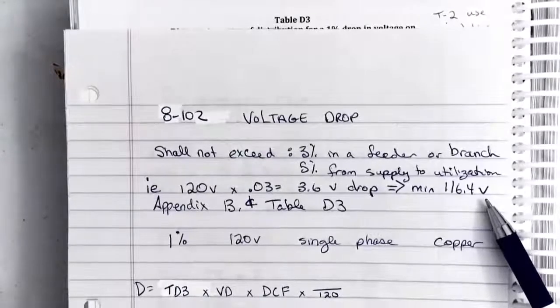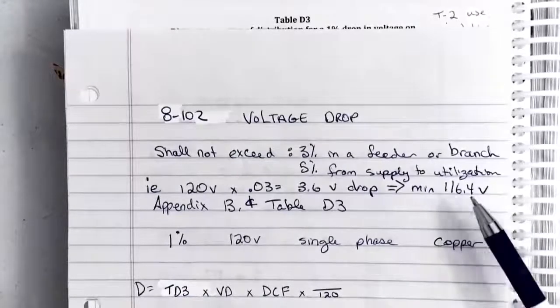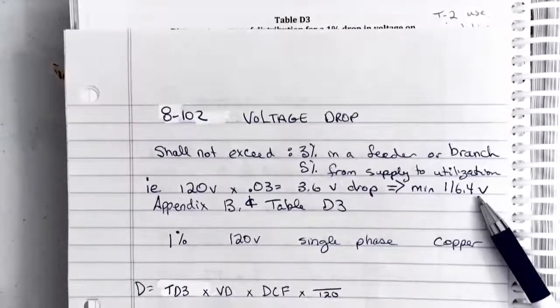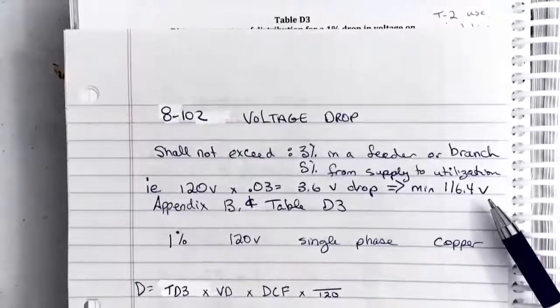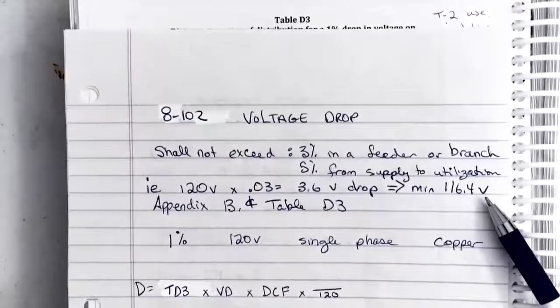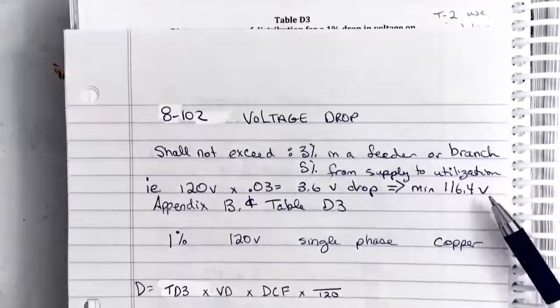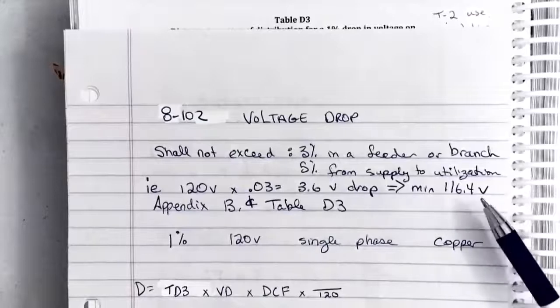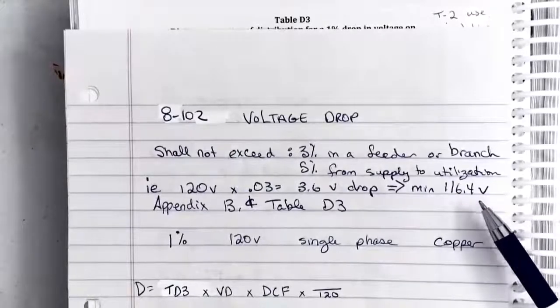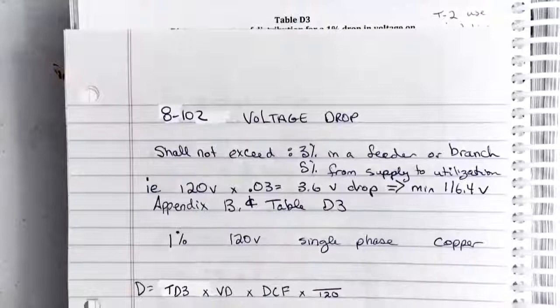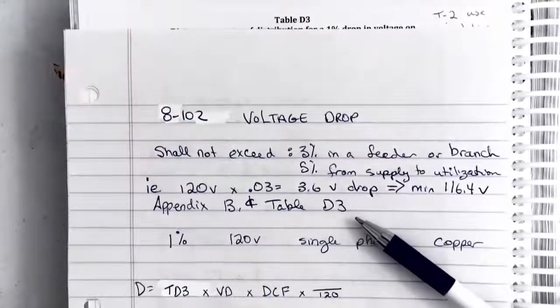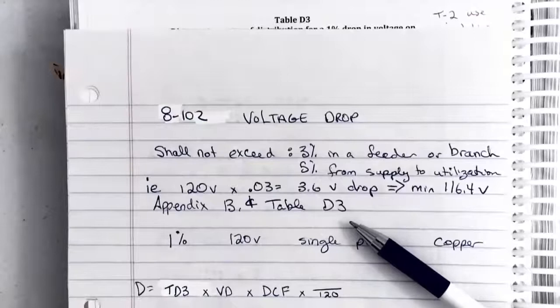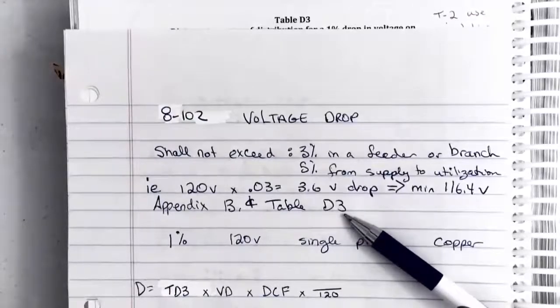This is really important because if this number gets too low we can end up with all kinds of challenges at our load, and the load will not operate correctly. If it's a motor it could overheat and burn out. So we really want to make sure that we don't get a lower voltage than is allowed. Now to help us calculate this out, 8102 sends us to Appendix B and also Table D3.